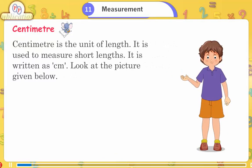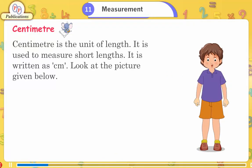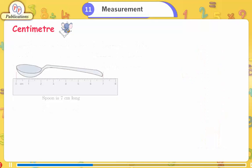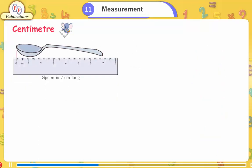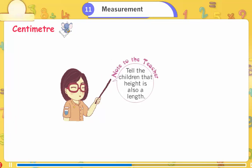Centimeter is the unit of length. It is used to measure short lengths and is written as cm. Look at the picture: a spoon is 7 centimeters long and a tongue depressor is 10 centimeters long.